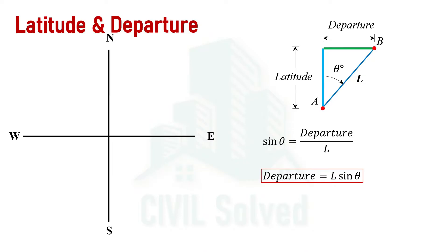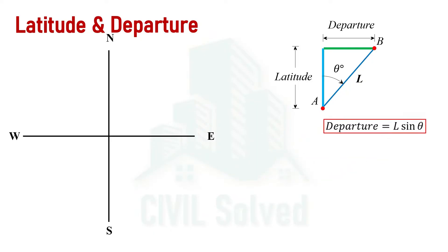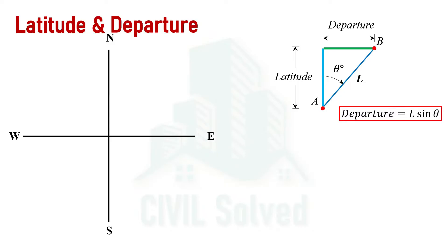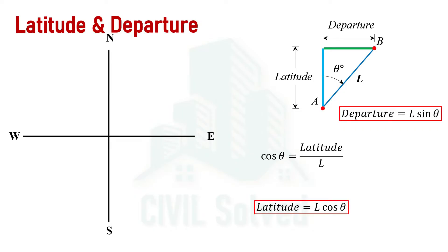So if we know the length and bearing of the line, we can calculate the departure. Similarly, using cosine theta, which equals base over hypotenuse — the base is latitude and hypotenuse is L — so cosine theta equals latitude over L. By cross multiplying, the latitude equals L cos theta. The latitude can also be calculated if the length and bearing of the line are given.